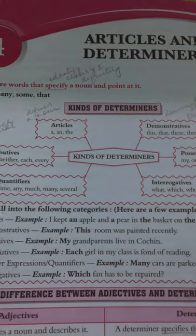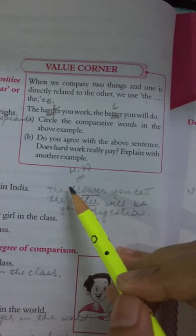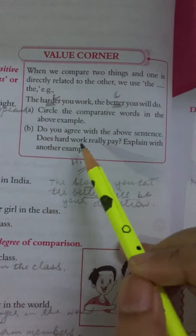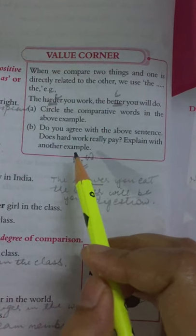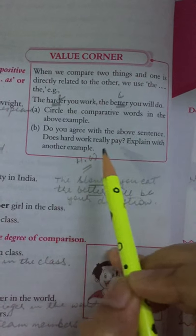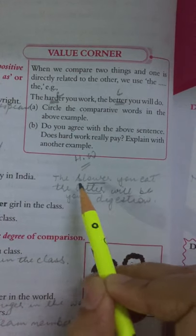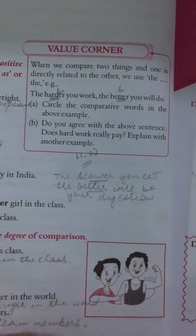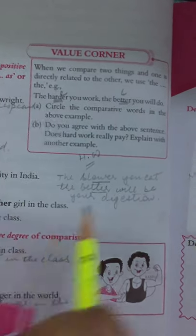Before beginning this chapter, I would like to go back to the homework I gave you in the last class. The homework was from the value corner — I asked you to explain another example. Another example would be: the slower you eat, the better will be your digestion.